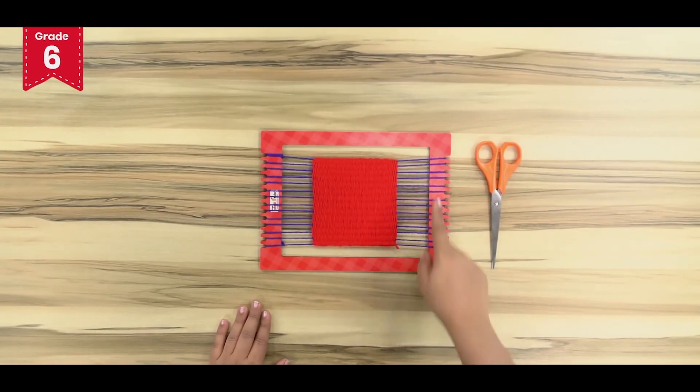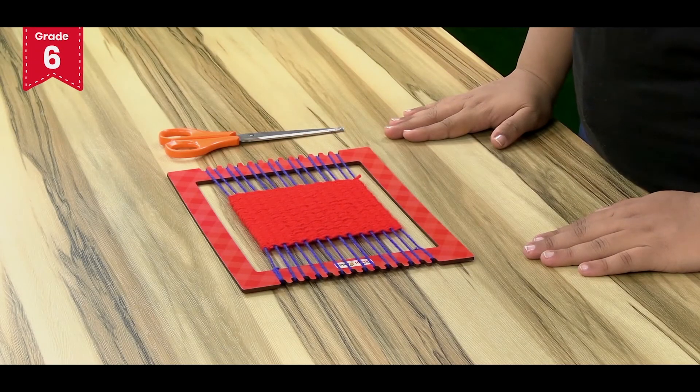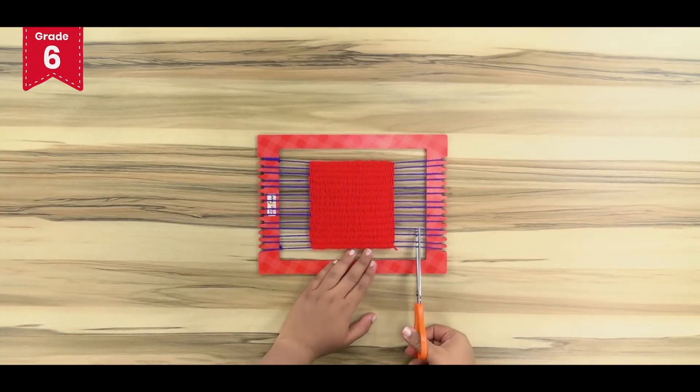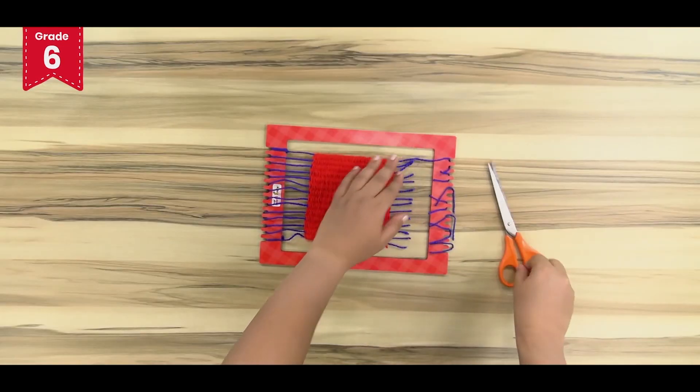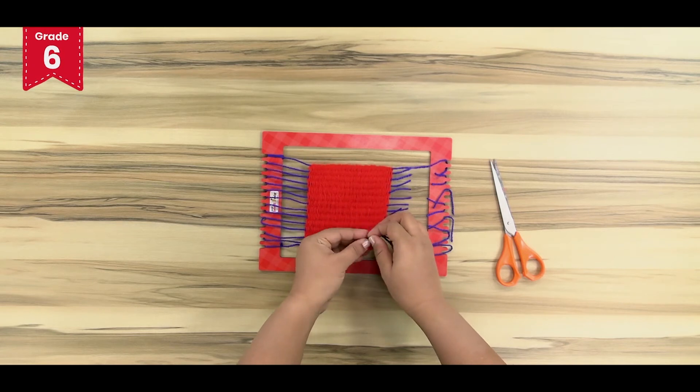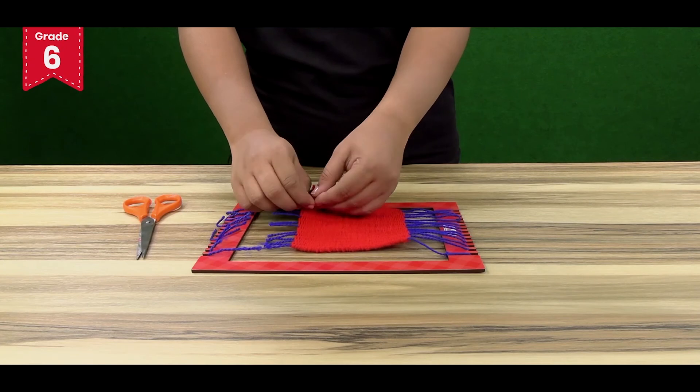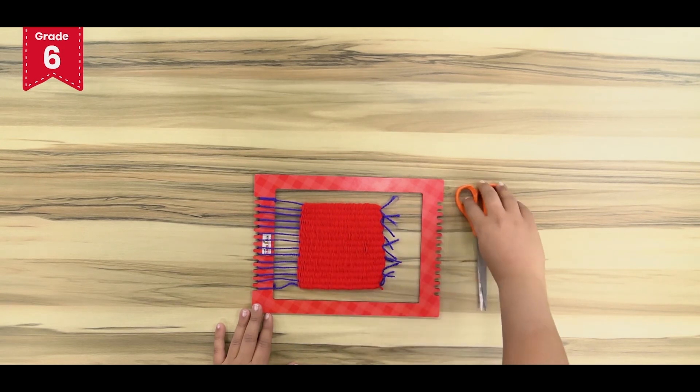Now cut these ends of the warp yarn, that is the blue thread, from the weaving frame. Take two ends and tie them separately, and repeat for others as well. After tying all the knots, repeat the same for the other side.